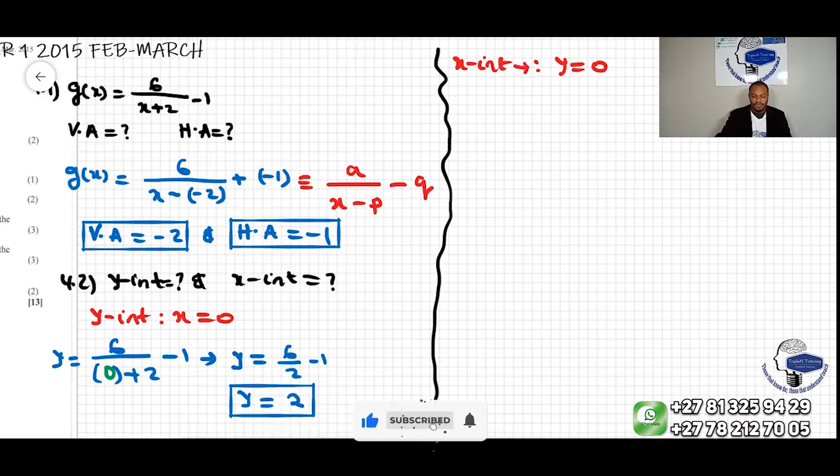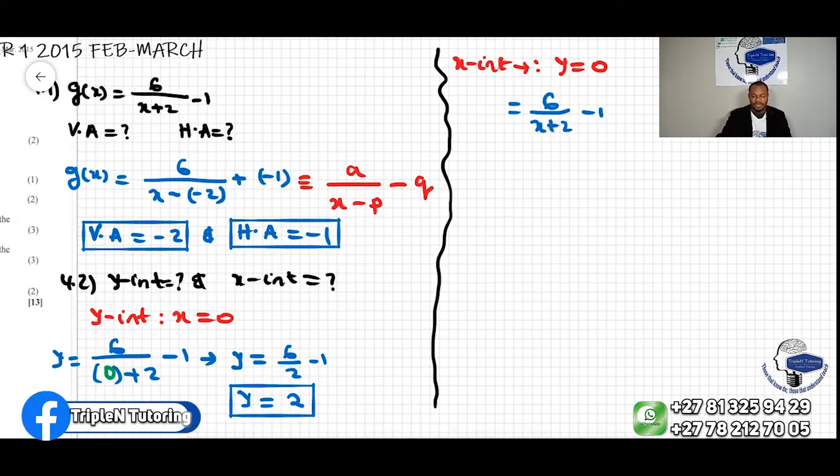So in this equation, it's 6 over x plus 2 minus 1, we make y equal to zero.